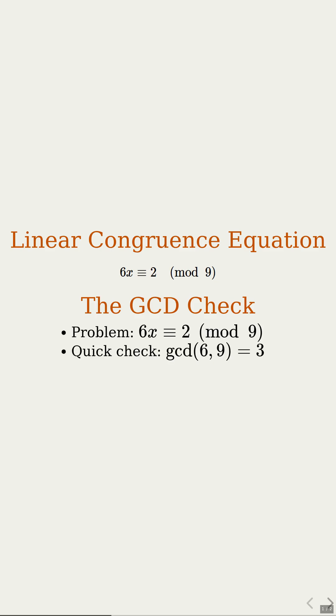Step 1. Find the greatest common divisor of a and n. For us, the greatest common divisor of 6 and 9 is 3. That was fast.